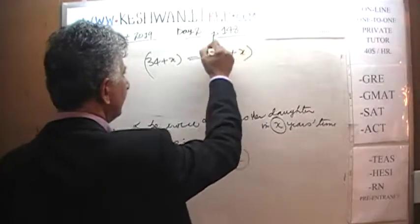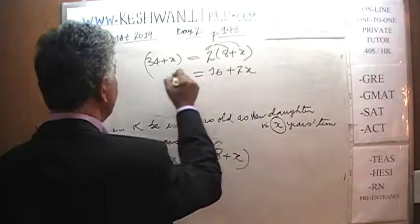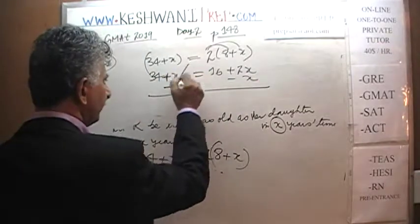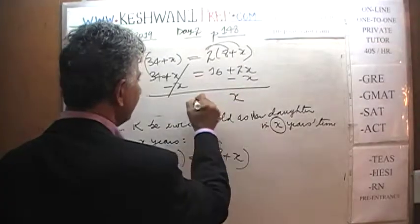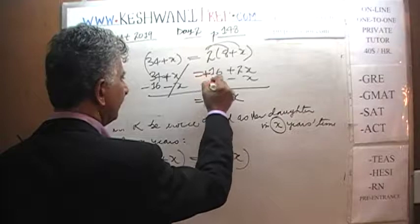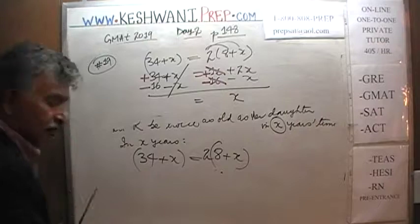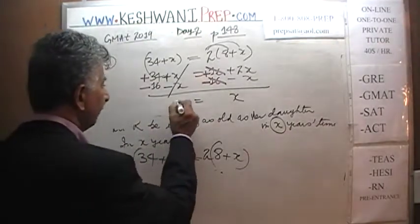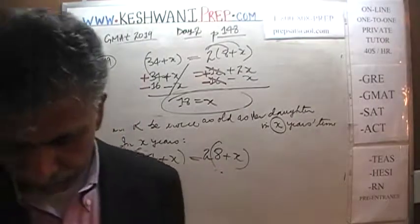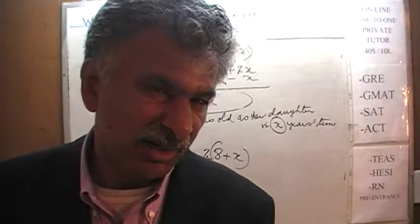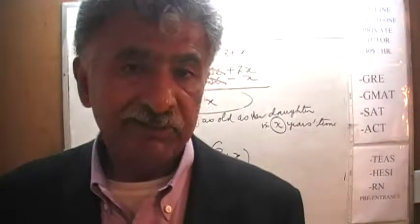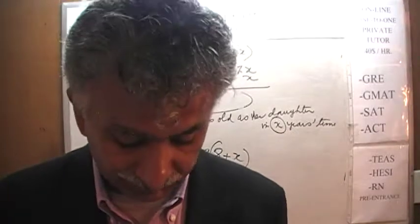Let's open the parentheses: we get thirty-four plus X equals sixteen plus two X. Subtract X from both sides — positive X and negative X drop out, giving thirty-four equals sixteen plus X. Subtract sixteen from both sides: thirty-four minus sixteen equals X, so X equals eighteen. That's exactly what we found using back-solving. We simply took one of the answer choices, put it back in the problem to see if it works — and if all the pieces fit like a jigsaw puzzle, that's the answer.